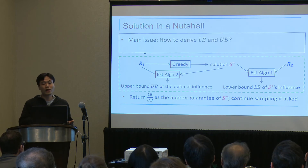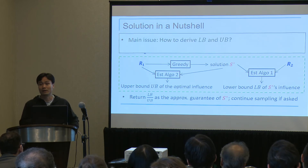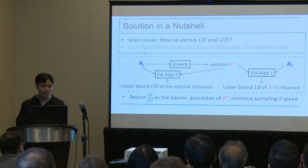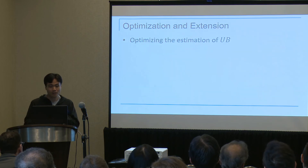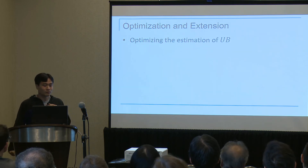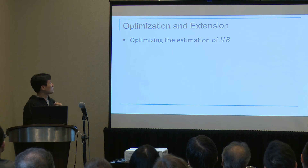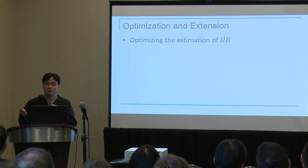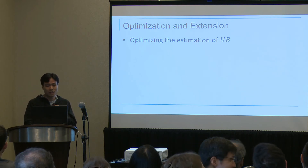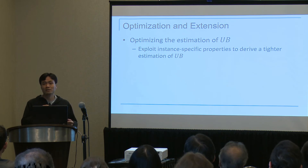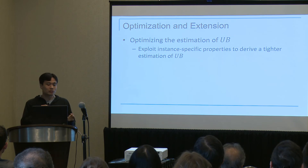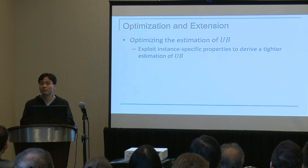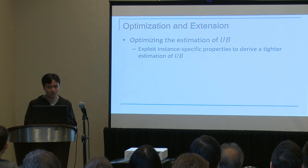The key issue is deriving these lower and upper bounds. The details are in the paper, but the basic idea is that we use kernel bounds to design the estimators. We also discussed an optimization for the upper bound estimation: if we avoid making pessimistic assumptions about the performance of our algorithm, we can look into the samples we have and exploit some instance-specific probabilities to tighten the bounds.